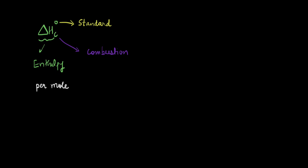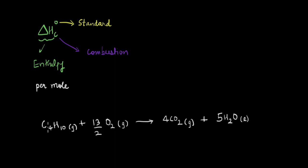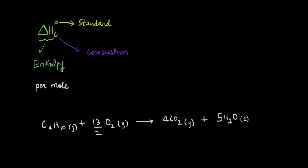Let's take an example to understand this better. Here we have one mole of butane, which is C4H10, undergoing combustion — that is, reaction with oxygen — giving CO2 and water. This is a reaction with oxygen and the reactants and products are in their standard states. Because this reaction is balanced, the enthalpy here will be for one mole of butane. So the standard enthalpy of combustion for this reaction is minus 2658 kilojoules per mole.